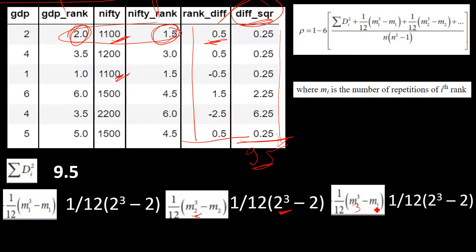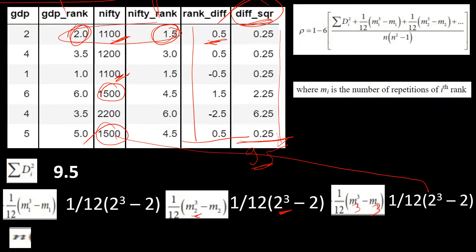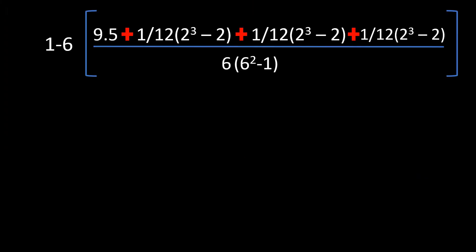We also have m3 — this is for the third repeated value, 1500, which was also repeated twice, so m3 equals 2 as well. If there were another repeated value, we would have m4, and so on. Then n is simply the number of observations in your data — here we have 6. If you have 10 records your n is 10, if 20 then 20, and so on.